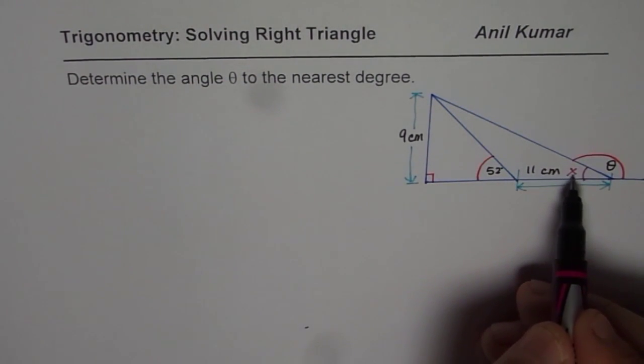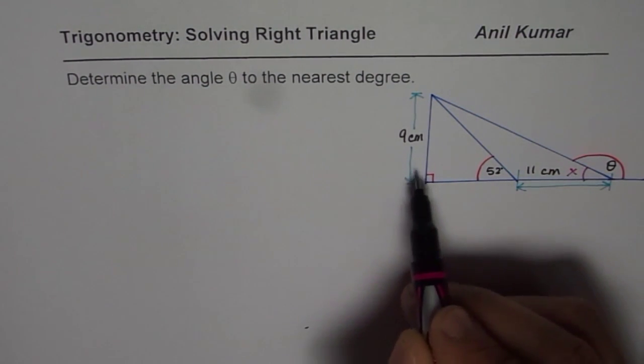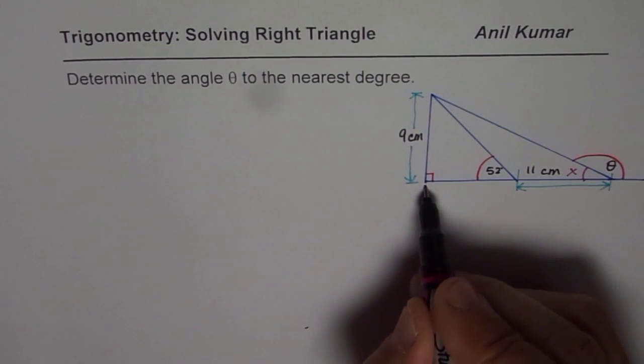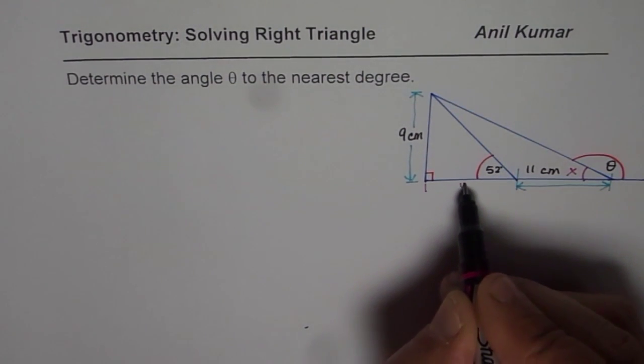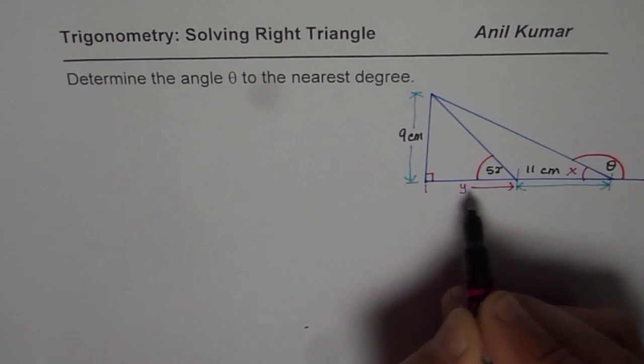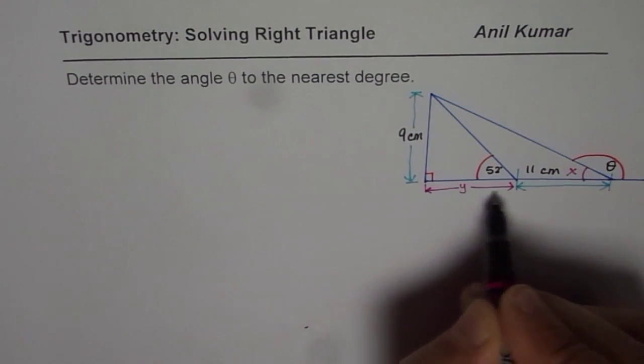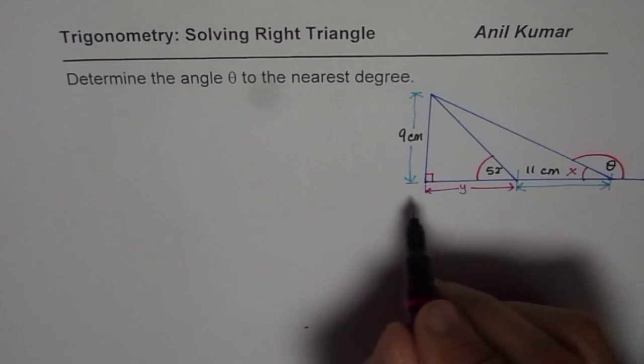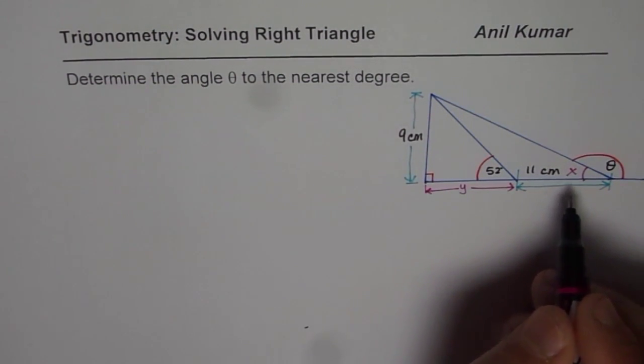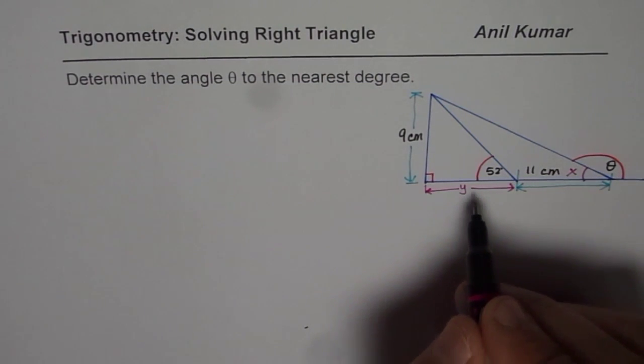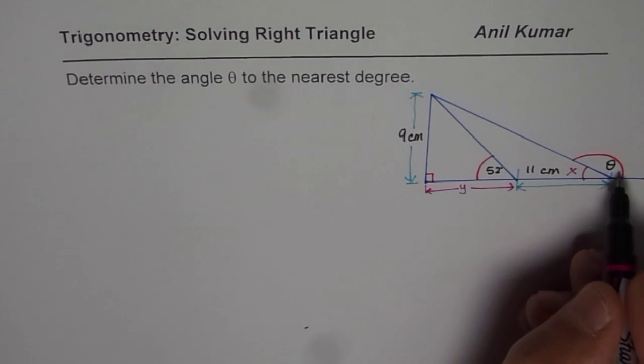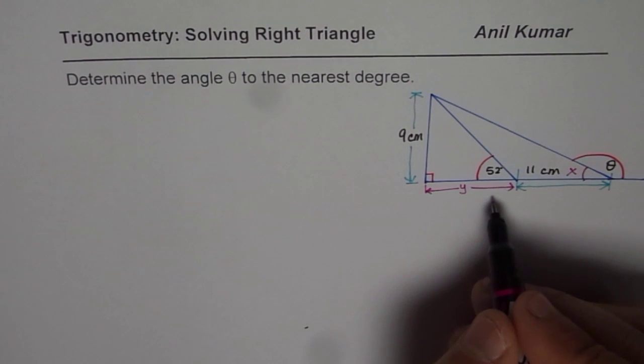Now to find this angle, what should be known to us? Now in this right triangle, we should know that length. So let me call this length as y. So that is how, in the given figure, we can actually identify what all we need to calculate to really get to our answer.